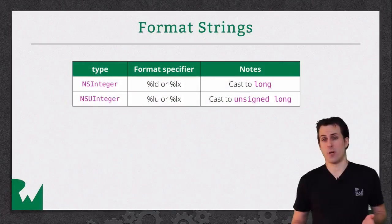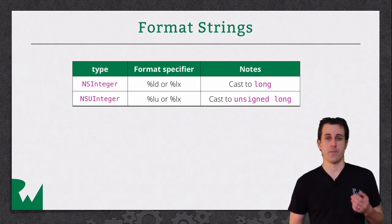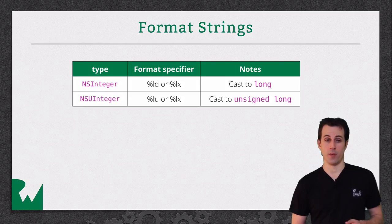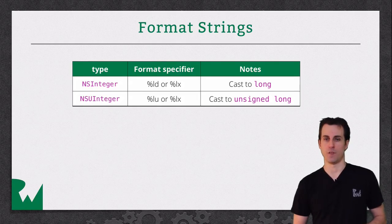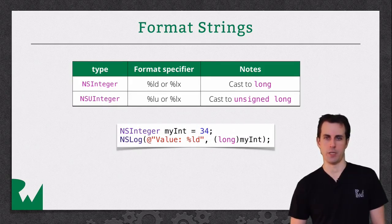So you might wonder, how do I print out NSInteger? Apple has given some guidelines for this. For NSInteger, you use %ld or %lx if you want hex. The important thing to remember is you have to cast it to a long before you pass it in. If you do it this way, it will work just fine on a 32-bit or 64-bit architecture. Here's a quick example of that.